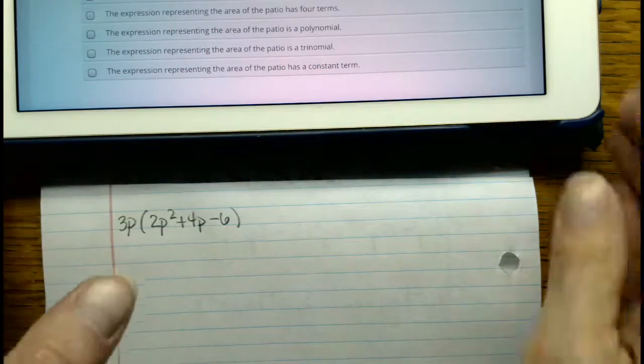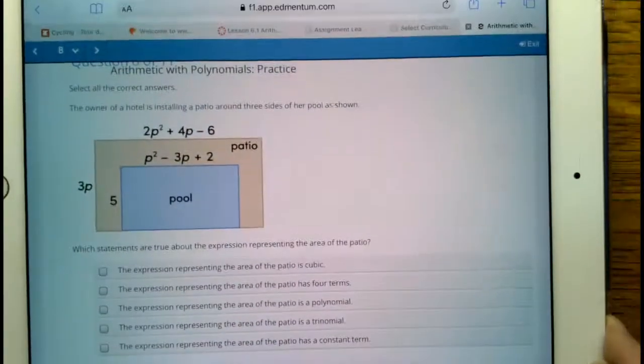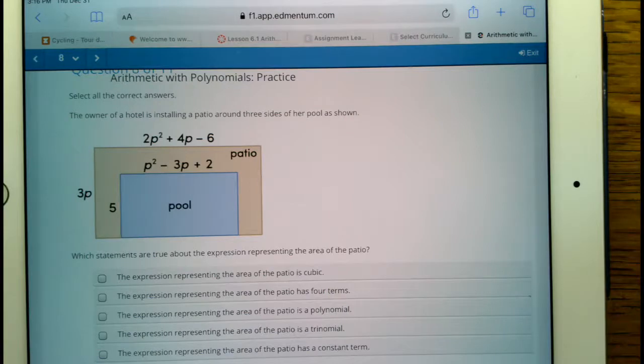But if you take a look, that's the area of the beige rectangle that you're seeing on your screen. And inside that is a blue rectangle for the pool.